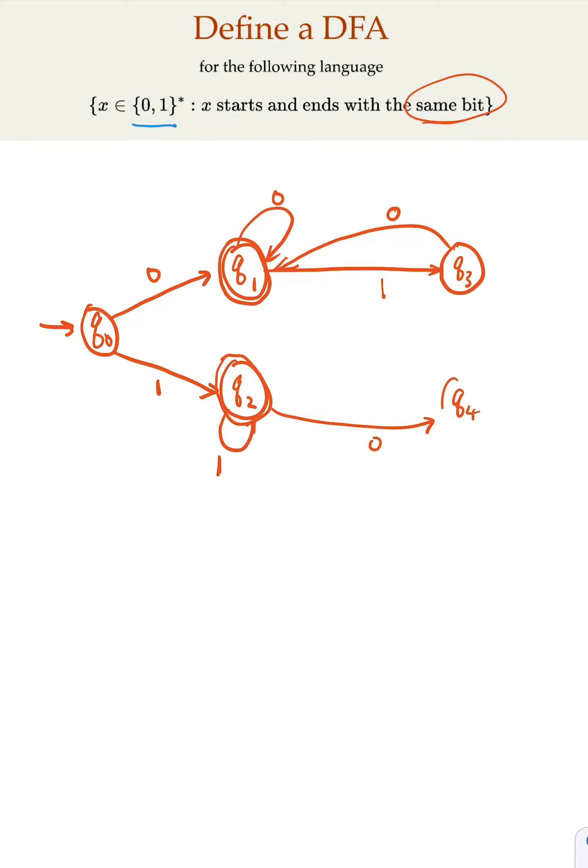In that state, if you accept 0, you're going to stay here. And if you get, in this case, if you've got a 1, you're going to stay here, right?